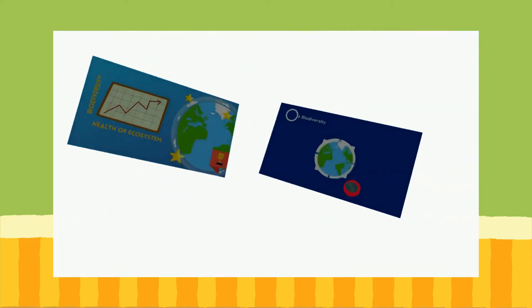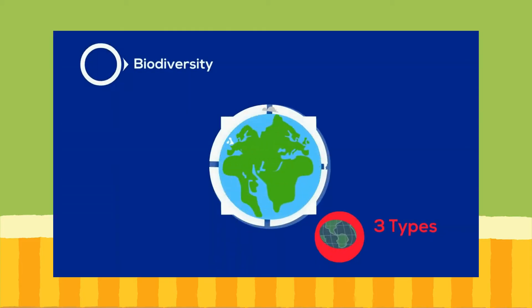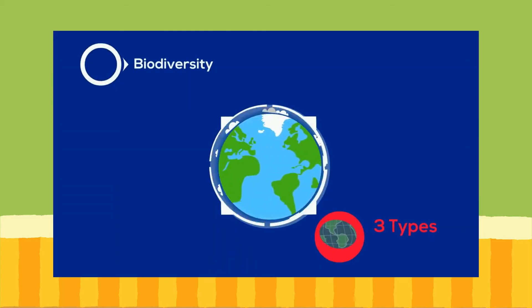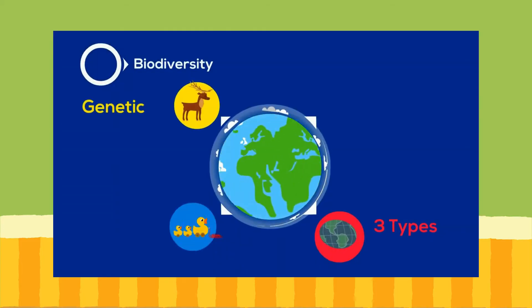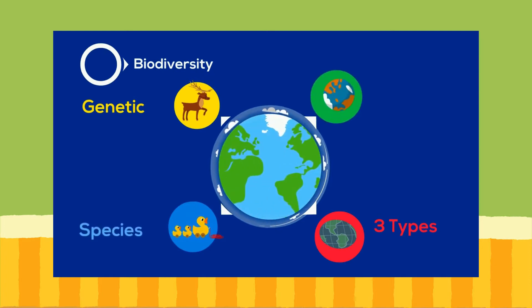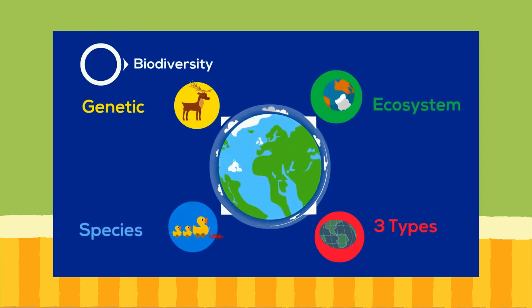Biodiversity can be broken down into three types: genetic diversity, species diversity, and ecosystem diversity.